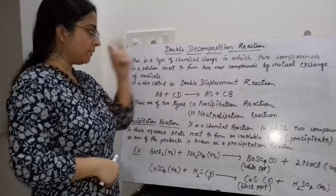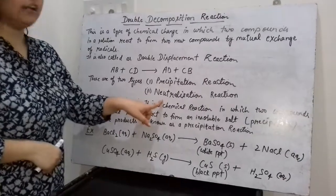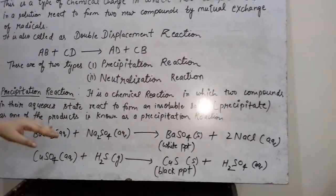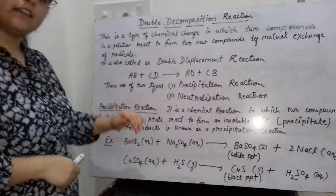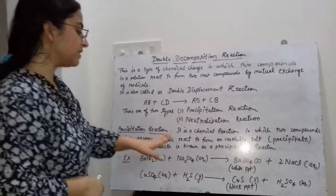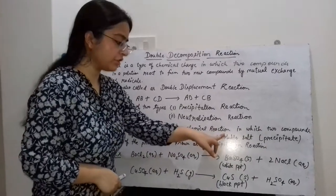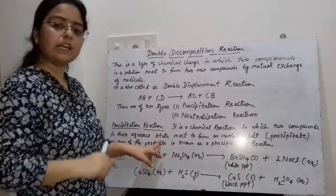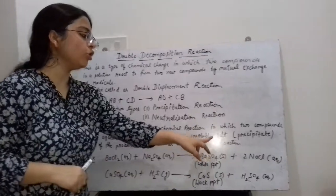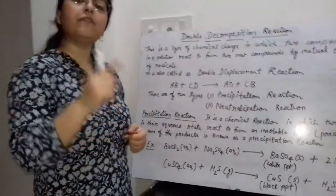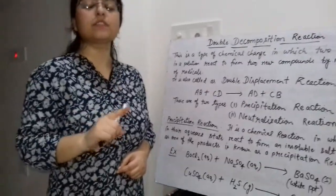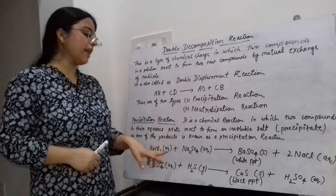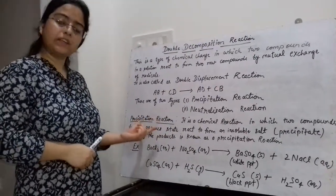Double decomposition reaction is of two types: precipitation reaction and neutralization reaction. A precipitation reaction is a type of double decomposition reaction in which two compounds in their aqueous state react to form an insoluble salt called a precipitate as one of the products. For example, barium chloride and sodium sulphate both in aqueous state react — barium sulphate, a white precipitate, is formed as one product and sodium chloride in aqueous state is the other product.